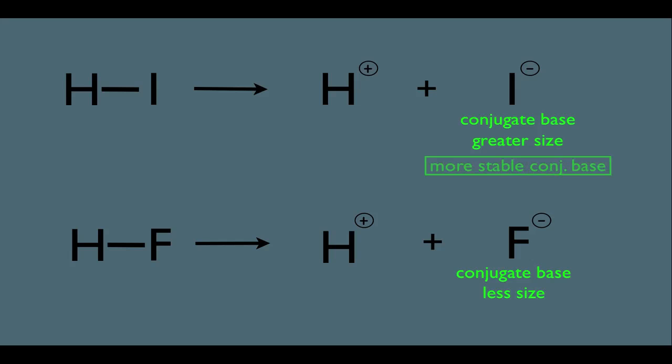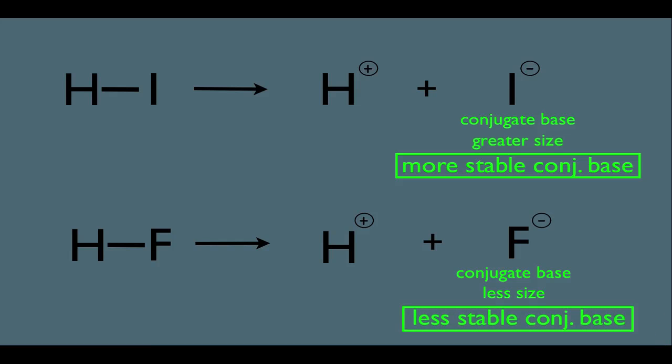So that means this is the more stable conjugate base, and F- is the less stable conjugate base. And what that implies is the top reaction is therefore more favored, and the bottom reaction is less favored.